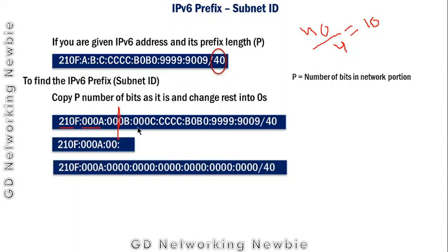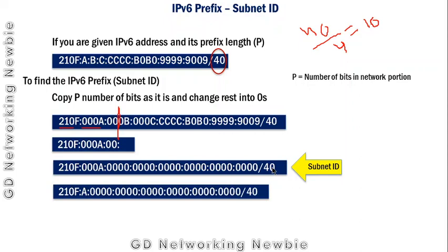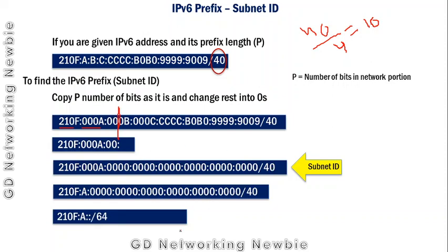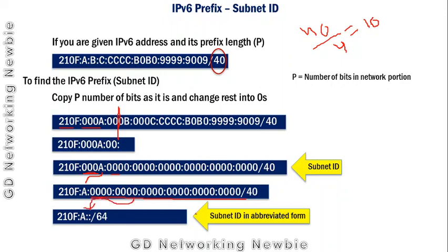The rest of the bits are set to 0, giving us our subnet ID. To write it in abbreviated form, we can see there is a long consecutive sequence of zeros, which can be replaced by a double colon. The leading zeros have also been eliminated as per the rules — for example, three leading zeros are removed, leaving only 'a'. The remaining zeros are replaced by the double-colon sign, giving us the abbreviated form of the subnet ID.